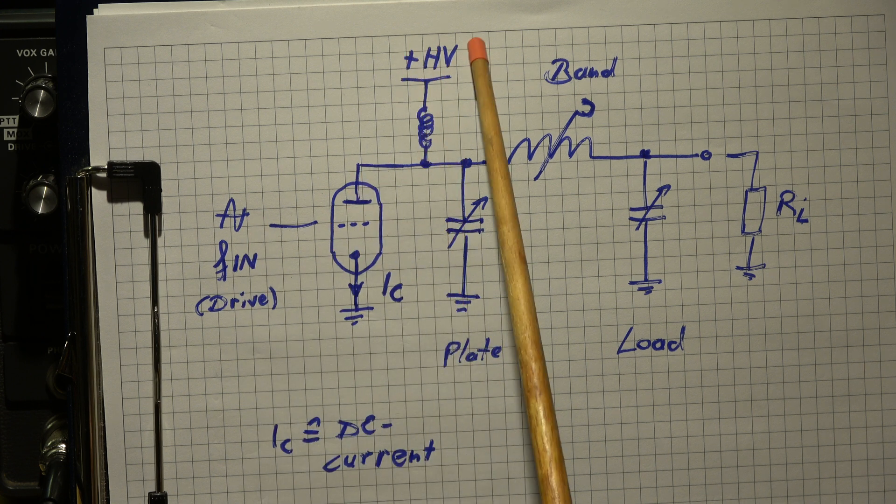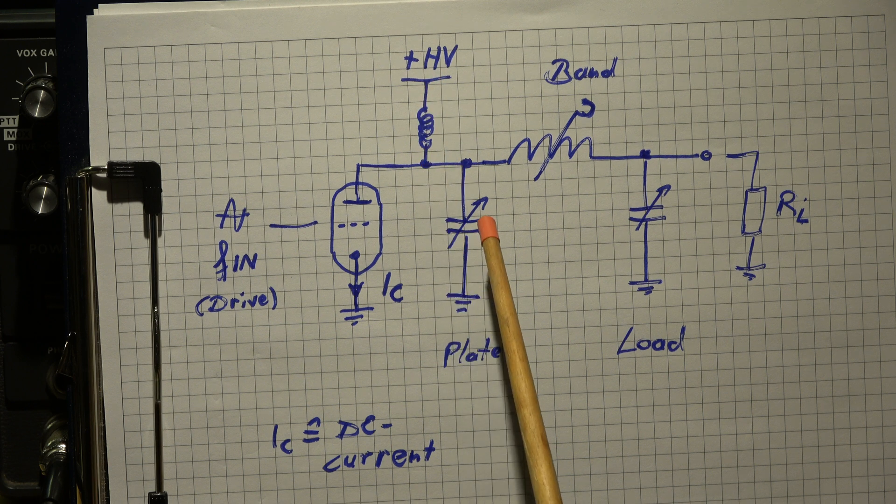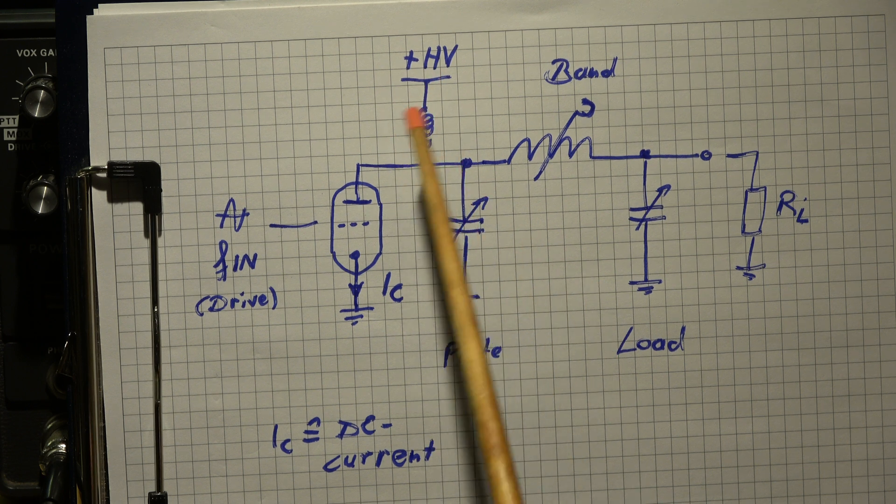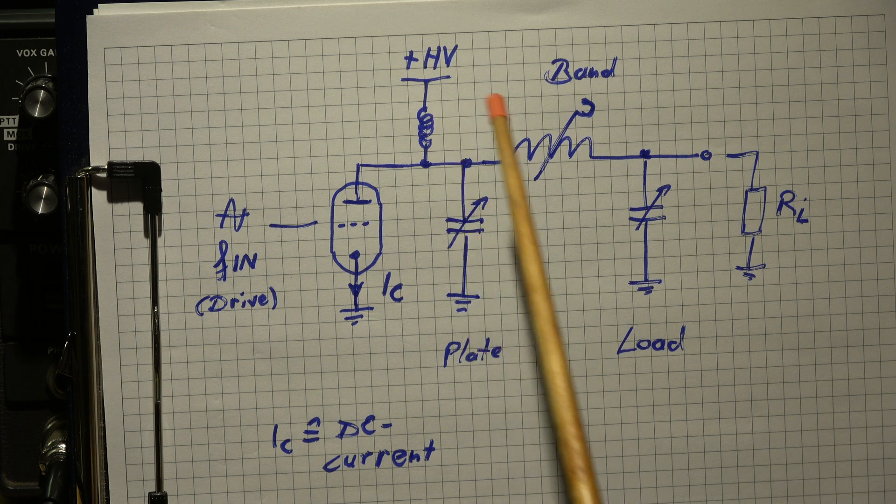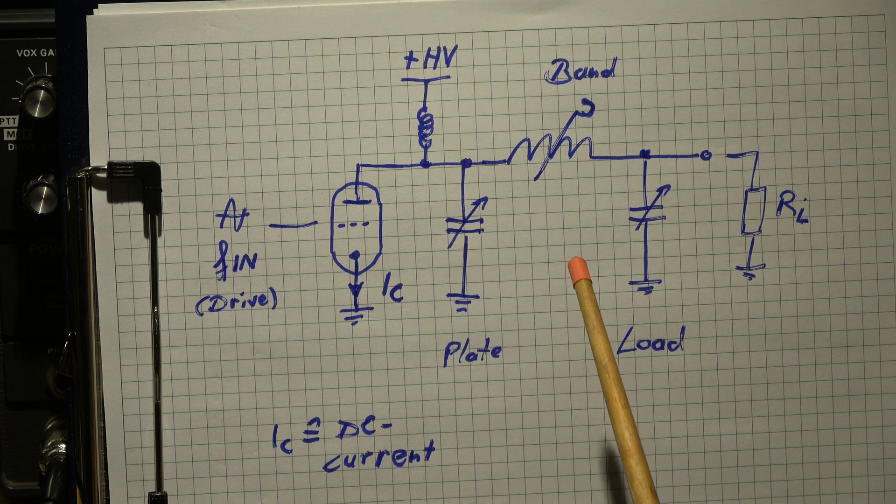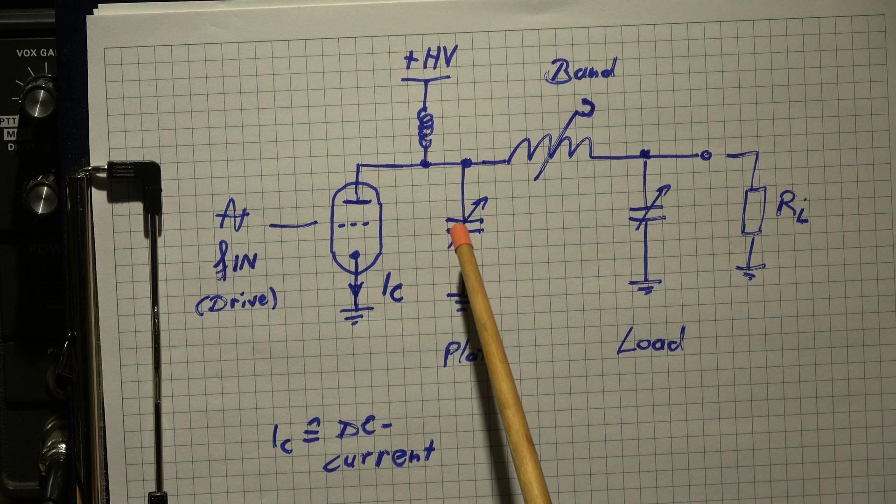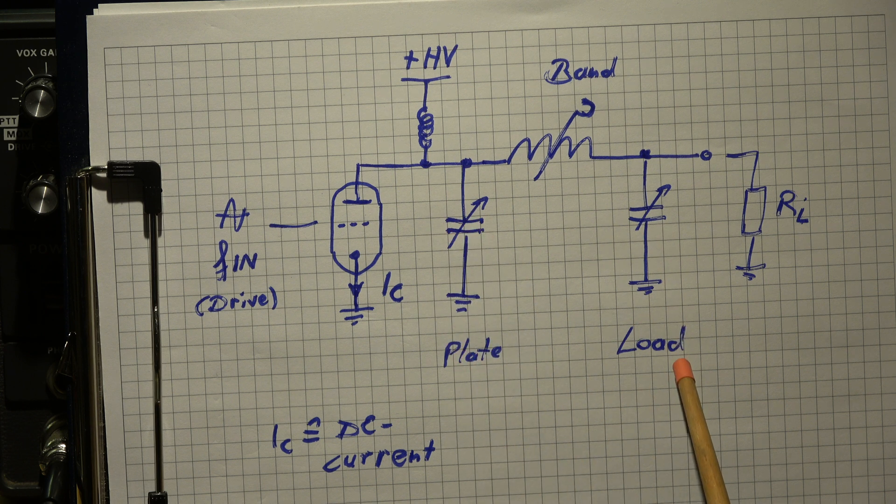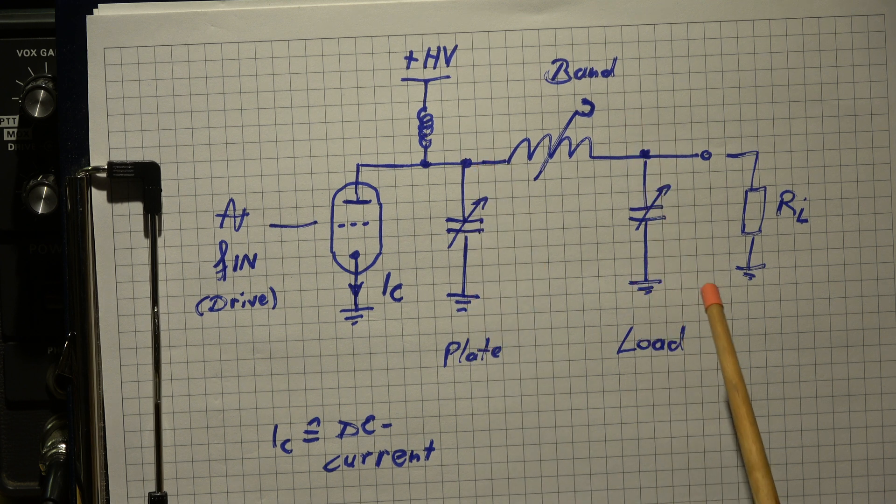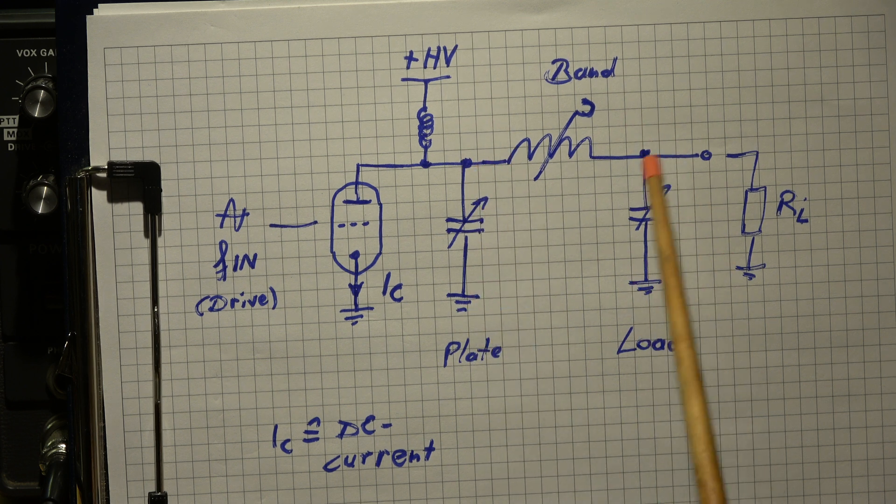Here we have the anode. Here we have the high voltage, it's a big choke. There's a damping resistor in parallel I didn't show to prevent any VHF or HF oscillations. And here we have the two capacitors, plate and load, and in series a coil. It's a so-called PI filter.